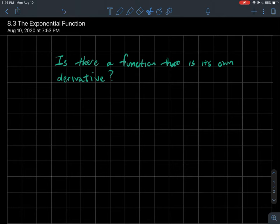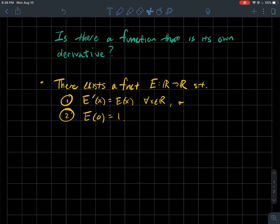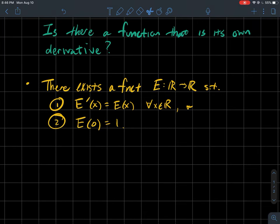The main question we'll look at in this video is: is there a function that is its own derivative? The result we want to prove is stated here in yellow. There does exist a function, we'll call it capital E, whose domain and range are the real numbers, such that E prime equals E for every real number x, and also E of 0 equals 1 — so the y-intercept of that function is 1.